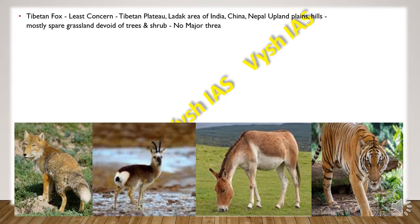The next animal is the Tibetan Fox, whose status is least concerned. It is found in the Tibetan Plateau, Ladakh area of India, and also in China and Nepal, in upland plains and hills. They are mostly seen on sparse grasslands which are devoid of trees and shrubs. They don't face any major threats.